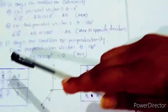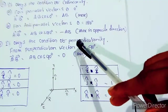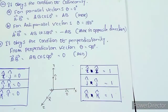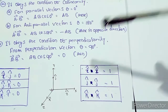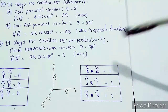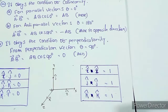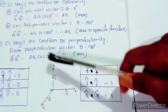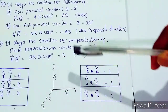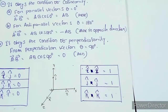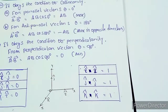This is the condition of perpendicularity. When cosθ equals 0, the dot product equals zero. This means the dot product of two perpendicular vectors is zero.